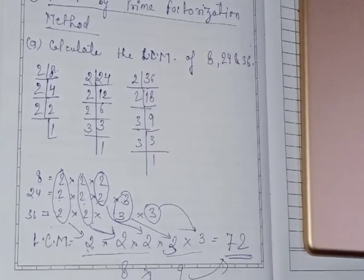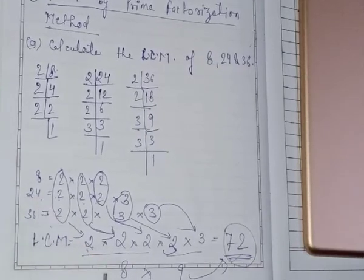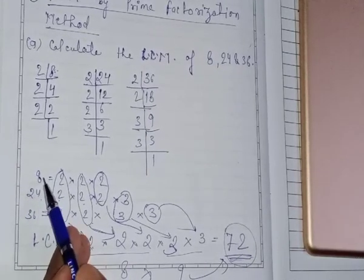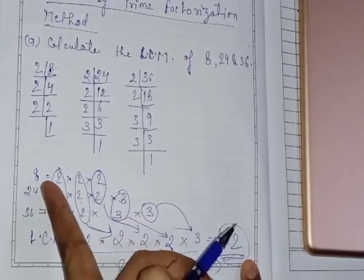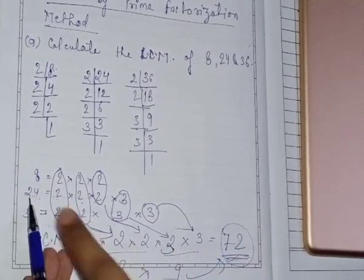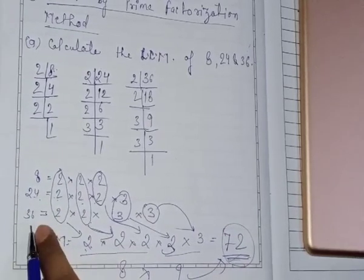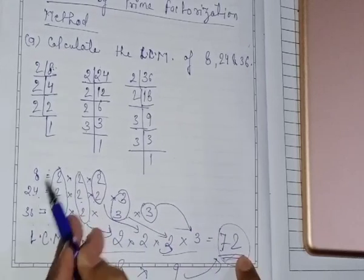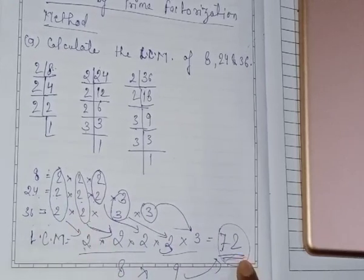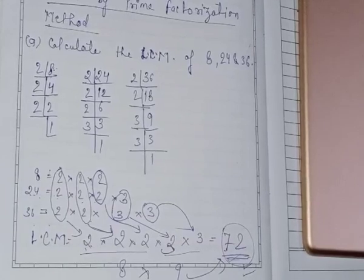So 72 is our LCM. Now, the LCM 72 is divisible by 8, 24, and 36. You can see that 8 × 9 is 72, so 72 is divisible by 8; 24 × 3 is 72; and 36 × 2 is 72. It means 72 is divisible by all the given numbers. This is how we find LCM by prime factorization method.